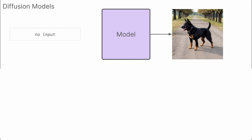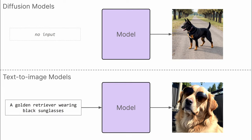Modern image models are generally built on what's called diffusion models, which generate images from pure Gaussian noise. One limitation of diffusion models is that they just generate any image at random without any way to control the process. Text-to-image models, on the other hand, add the modality of text to guide the image generation process.